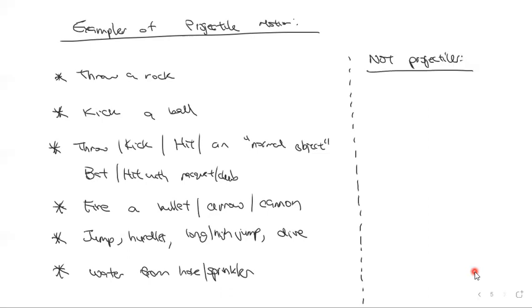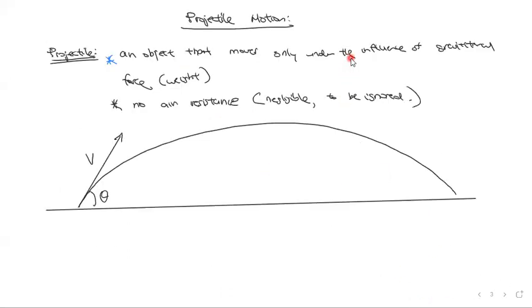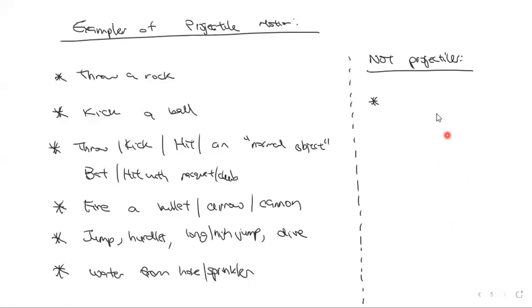What is not a projectile? Well, it has to violate our assumptions. Our assumptions are that the only force acting on it is gravity and there are no other forces such as air resistance. So what things go through the air that you may or may not think of as projectiles but they actually aren't by our definition? A paper airplane would not generally be considered a projectile, and the reason for that is if you think about throwing a paper airplane and throwing a rock, they don't really act the same way. The paper airplane has lift.